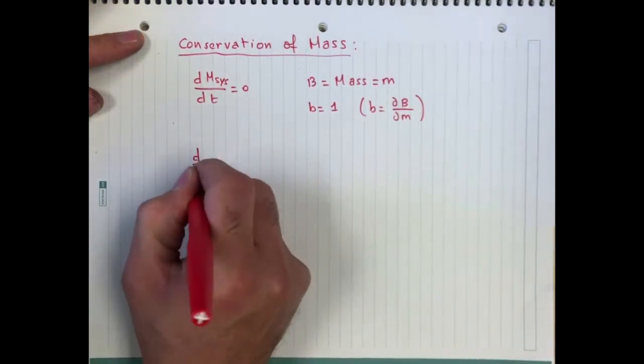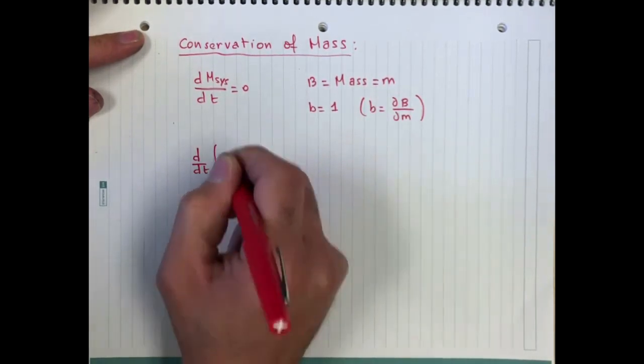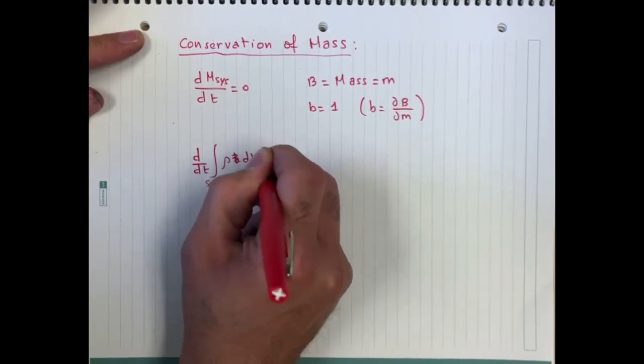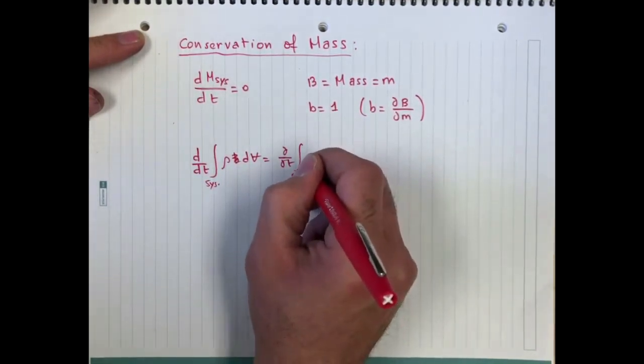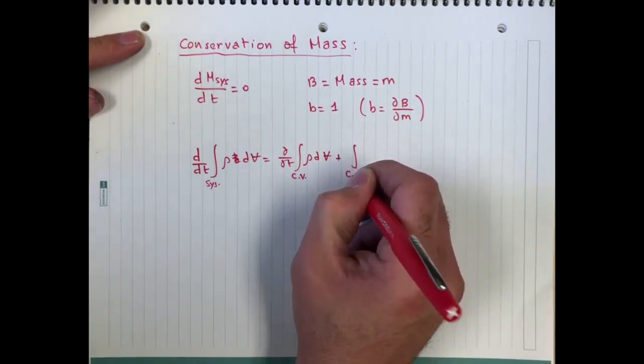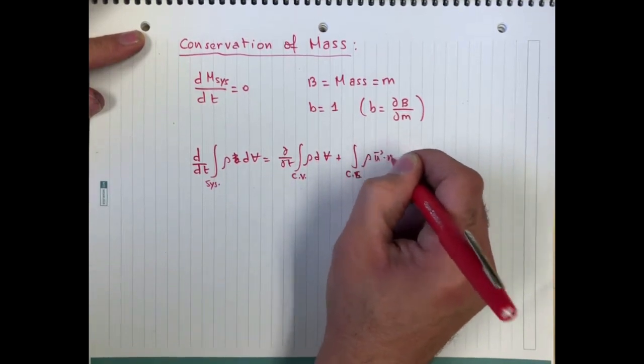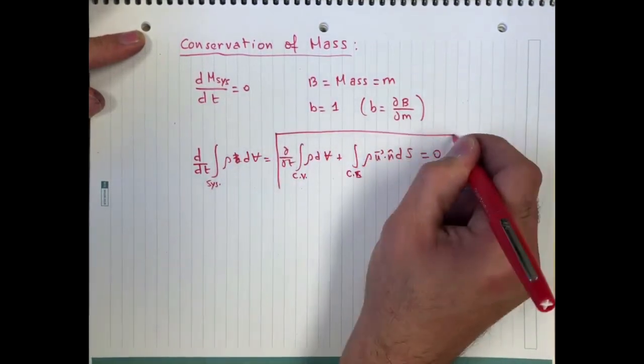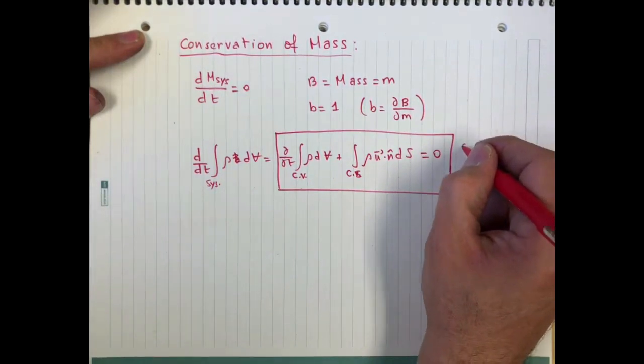Say that d/dt of the integral over the system of rho dv, that's equal partial/partial t of the integral over the control volume of rho dv plus the integral fluxes over the control surface of rho u dot n ds, and that's equal to zero. And that is what we call the continuity equation or the law of mass conservation.